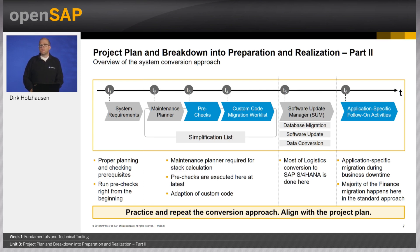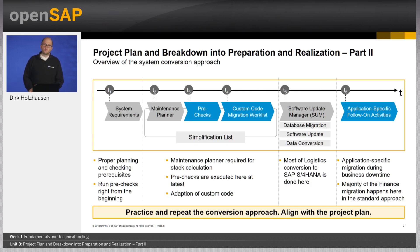Third, the conversion itself is executed using the Software Update Manager (SUM tool). The tool executes the database migration, the software update, and the data conversion to the new S4HANA data structures. Most of the conversion — specifically for the logistics part — is done here. Fourth, after the software upgrade tool is finalized, further activities must be executed: so-called application-specific migration activities that are part of the business downtime. Most of the final conversion is done as part of this step. It is recommended to practice this on the sandbox and to consider several runs during the project. Details about the conversion can be found in the conversion guide.